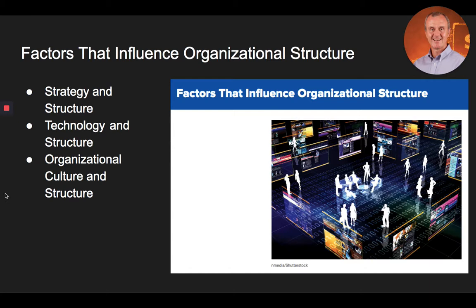According to Woodward, each of these different technologies affects the design of the organization's structure. As technical complexity increases, the organization gains more levels or grows taller. Organizations that mass produce products tend to have higher levels of formalization and centralization and also tend to employ a mechanistic structure. At the lower levels of technical complexity, with small batch unit production, there is very little standardization of products, low levels of formalization, and decentralized decision-making — the characteristics of an organic structure.